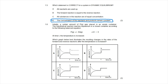Option B is a common mistake — we often think it is the forward reaction that equals the reverse reaction, when in fact it is the rate of the forward reaction that must equal the rate of the reverse reaction. Option C is also a common confusion: concentrations must be constant, not necessarily equal. So C is also incorrect.